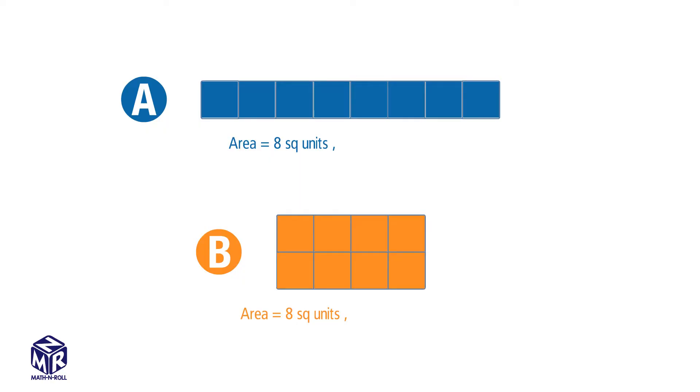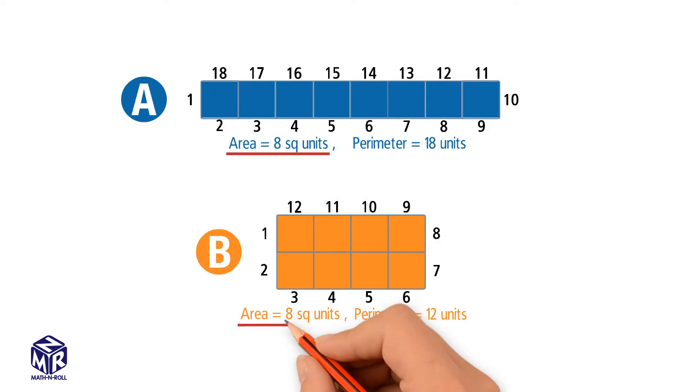Let's find the perimeters of each rectangle. The perimeter of rectangle A is 18 units, while the perimeter of rectangle B is only 12 units. We see that rectangles can have the same area, but different perimeters.